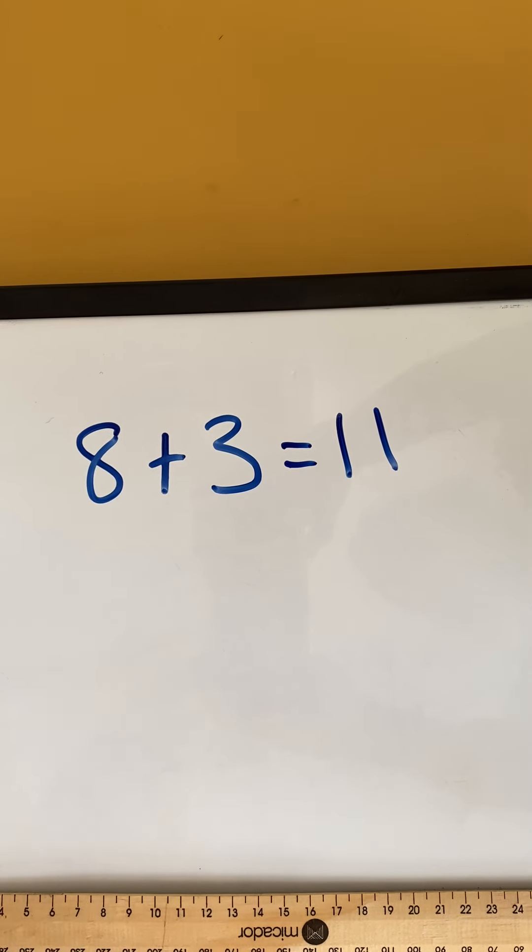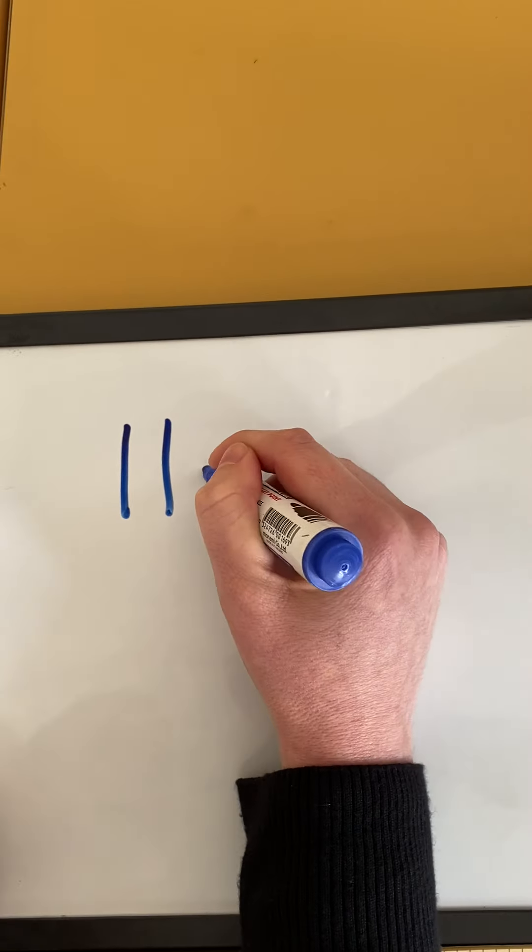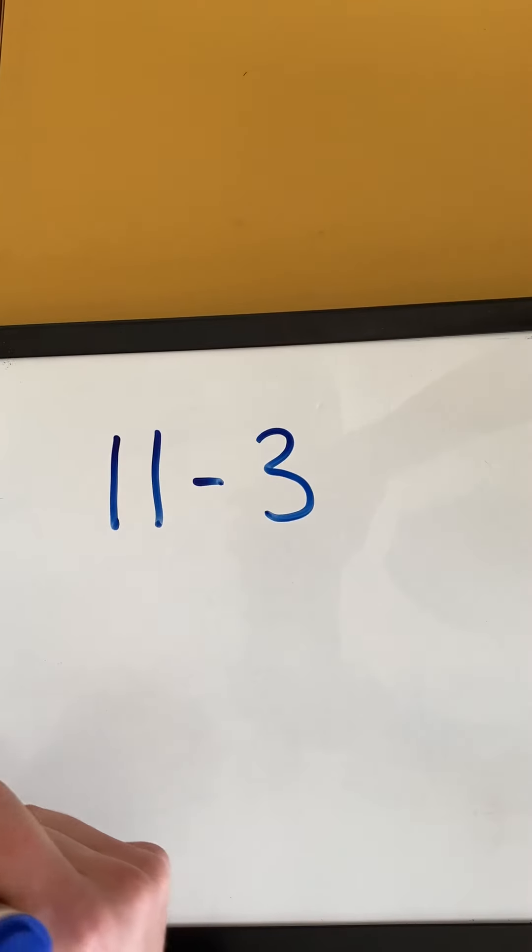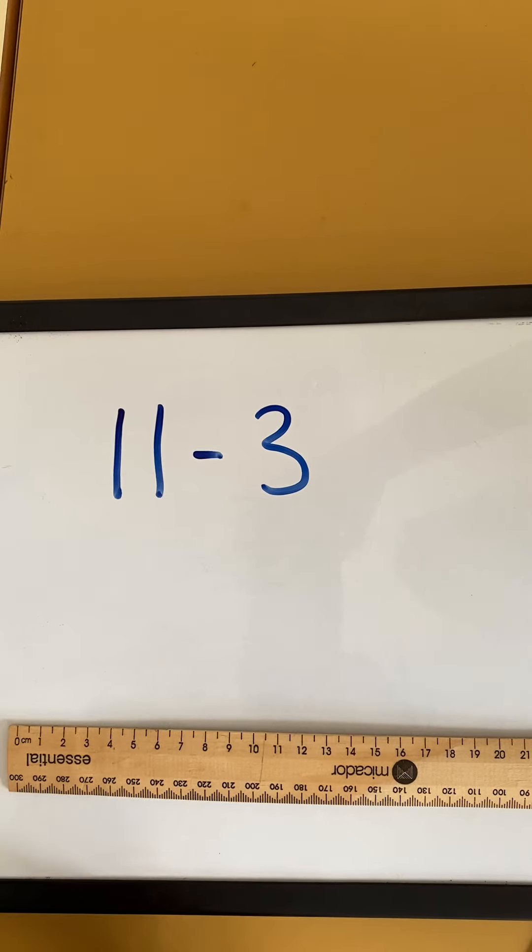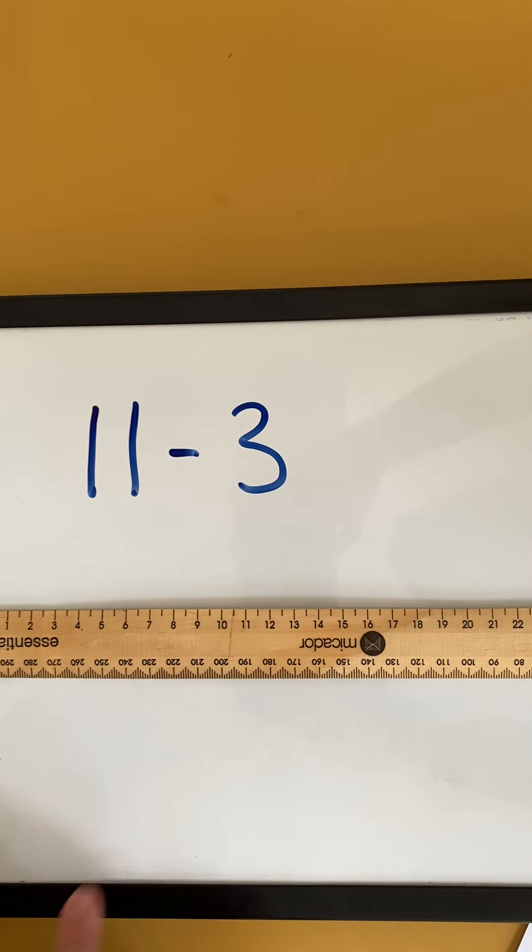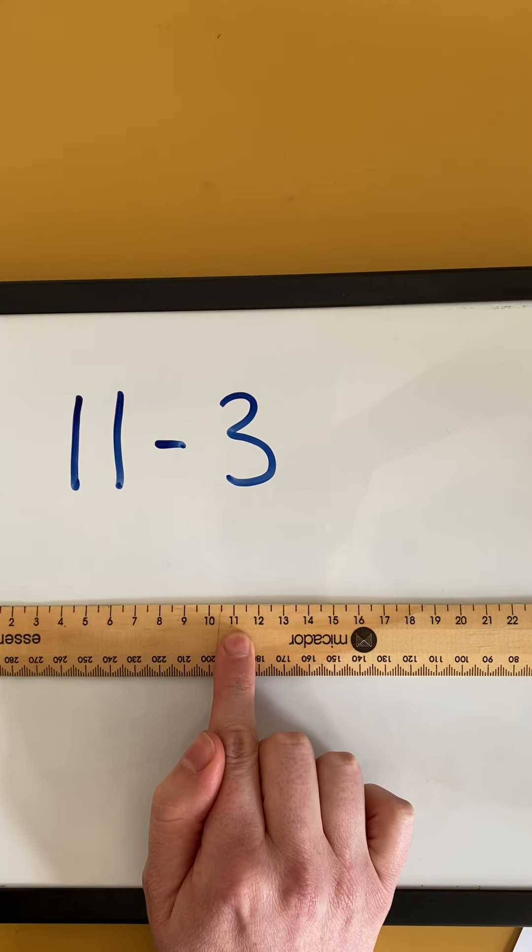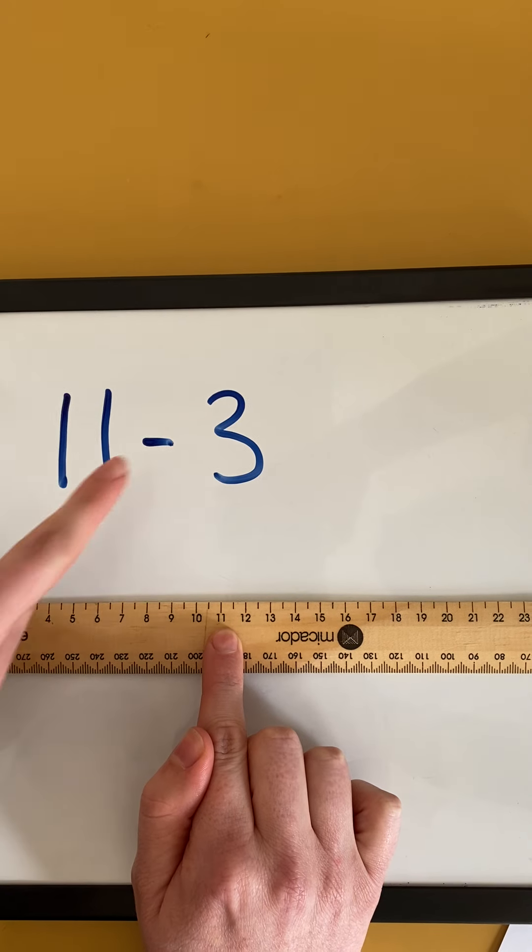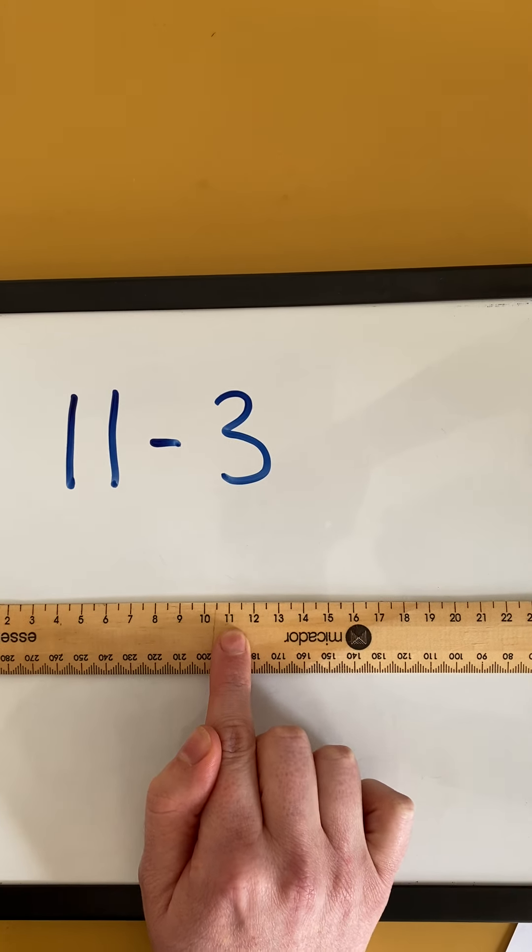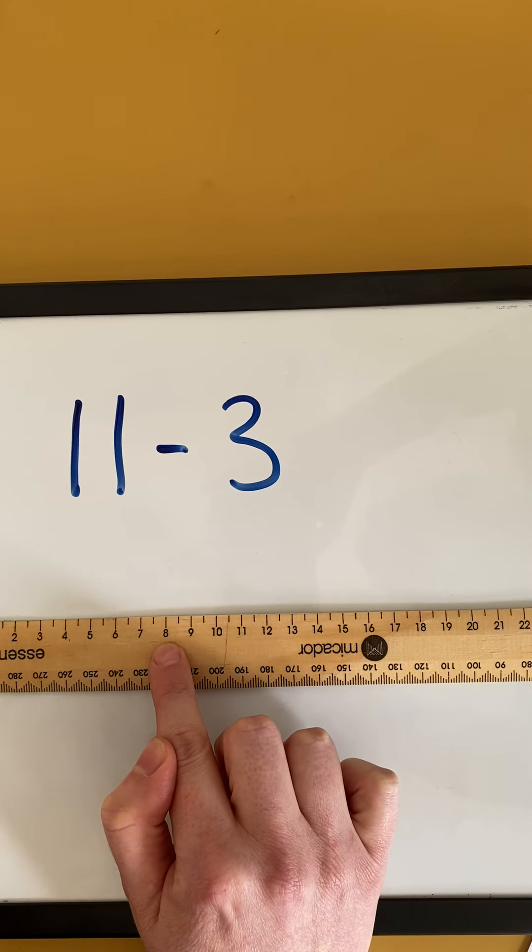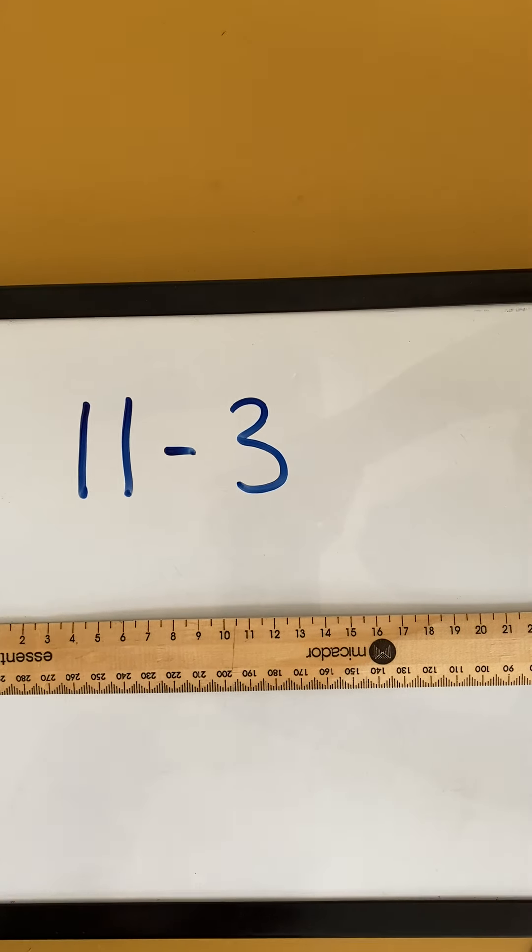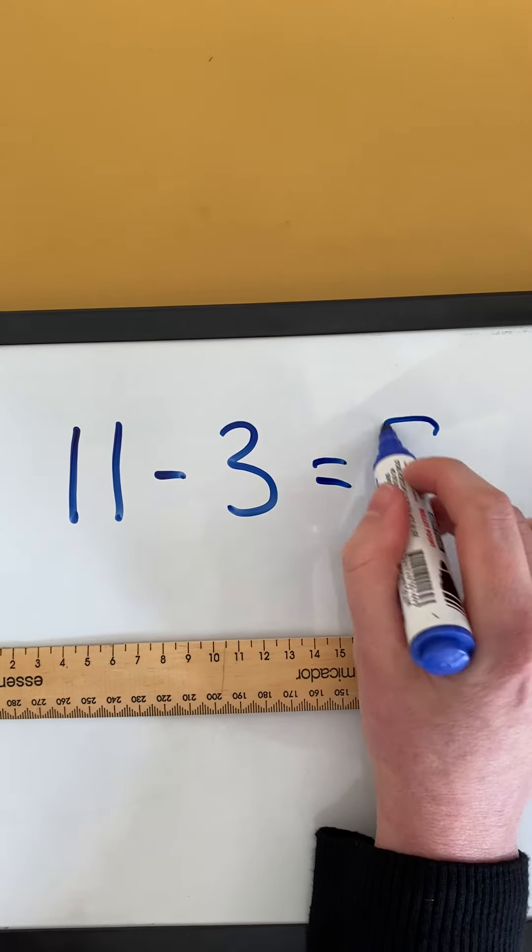I could also use this strategy for counting back. So I have my question 11 take away 3. Again, I'm going to count back only because this is a smaller number. So on my ruler, I'm going to find the number 11 and then I'm going to take away this time. So I'm going to go backwards on my ruler, take away 3. 1, 2, 3. So I know my answer is going to be 8.